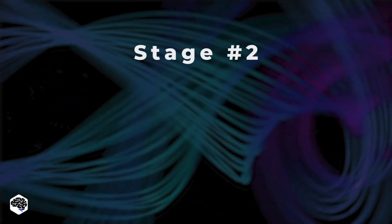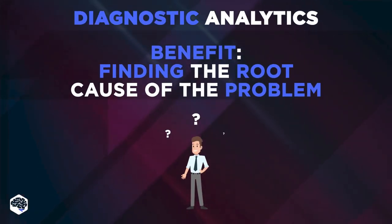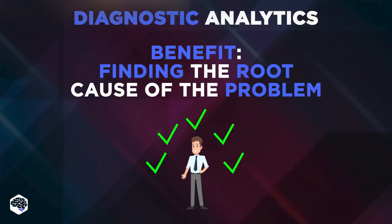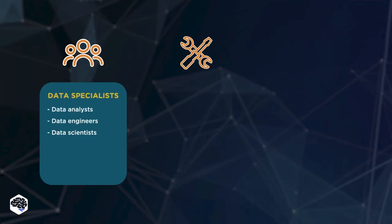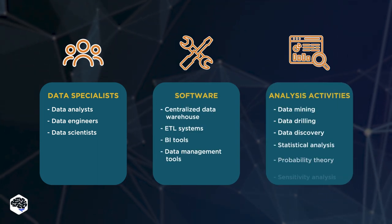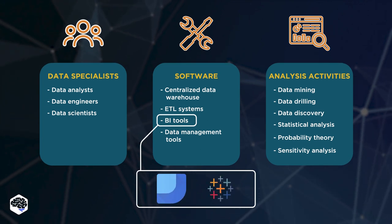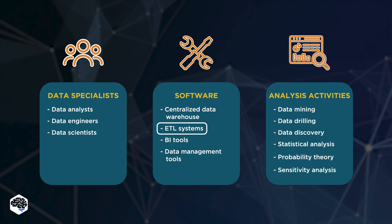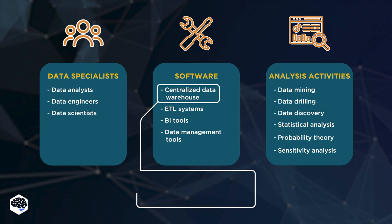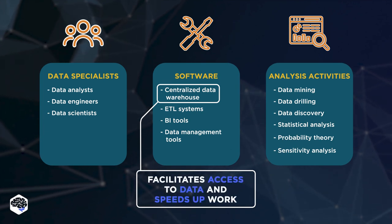The second stage of analytics maturity is diagnostic analytics. Finding the root cause of a problem is one of the greatest possibilities a second-tier system can provide. At this point, the data architecture becomes more complicated and includes advanced tools such as business intelligence software like Google Data Studio or Tableau, ETL systems for data flow processing, and a centralized data warehouse that facilitates access to analytical data and speeds up work with large datasets.